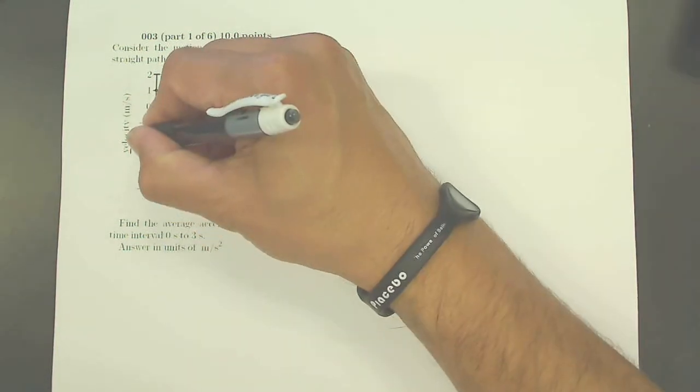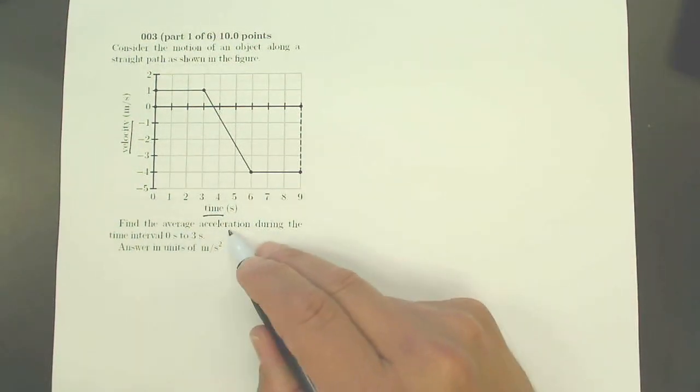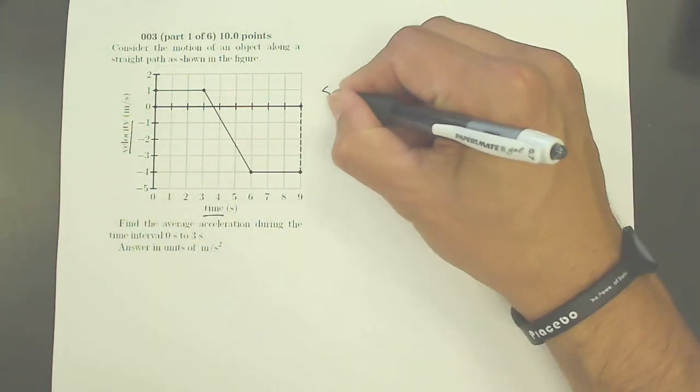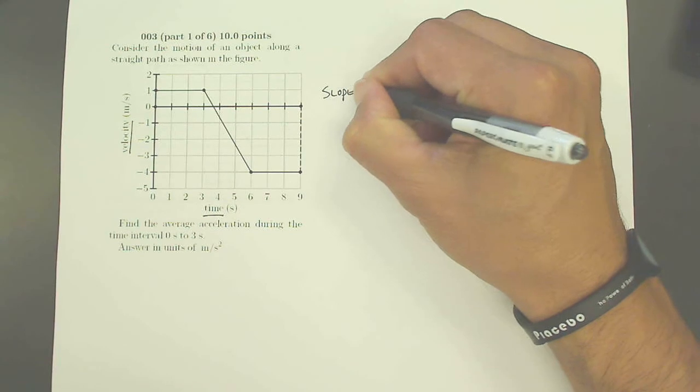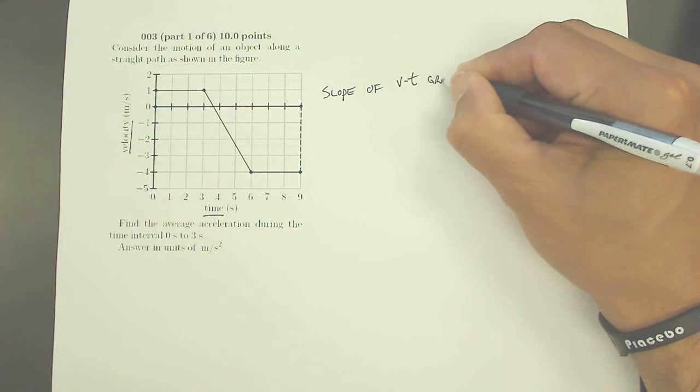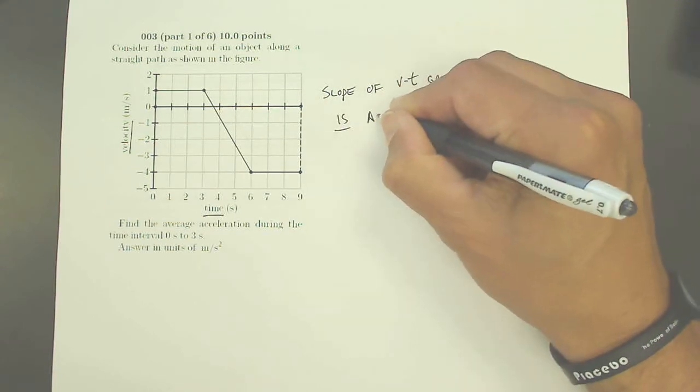Well be careful, this is a velocity versus time graph. I know that my average acceleration is going to be the slope of my velocity time graph, because the slope of a VT graph is the acceleration at that time.